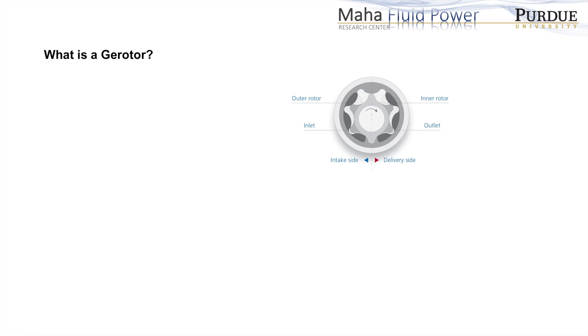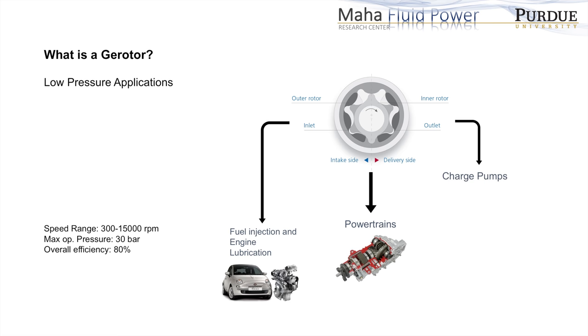Gerotor units are a type of positive displacement machines, mainly used for low-pressure applications such as fuel injection systems, engine lubrication, powertrain and charge pumps.